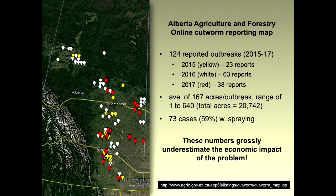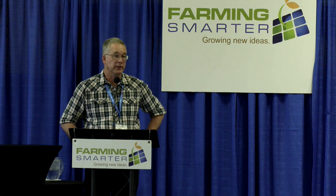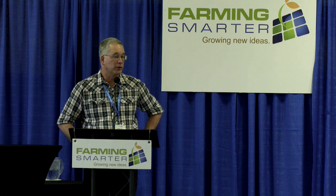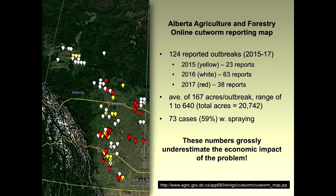This brings us back to the online reporting tool. When you get on the website, you'll see a map. It went live in 2015 and relies on people like yourselves, crop scouts, to send in information. As outbreaks are reported, the map is updated in almost real time — so if an outbreak was reported yesterday in your area, you can check the map and find out what's happening on your neighbor's land. There were 124 reported outbreaks over three years. Yellow marks 2015, white marks 2016, and red marks 2017.